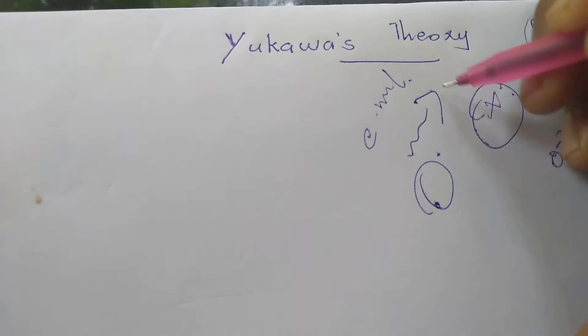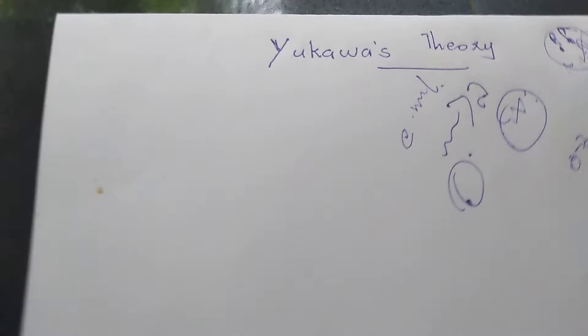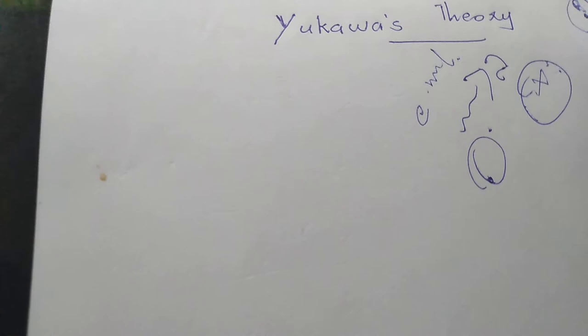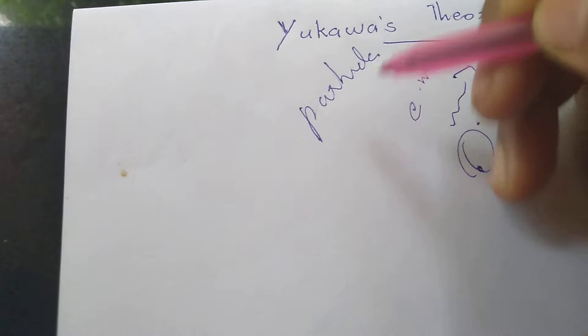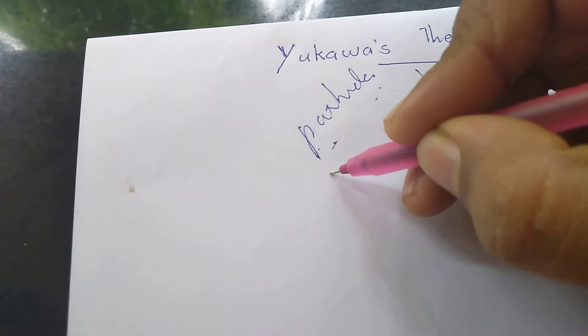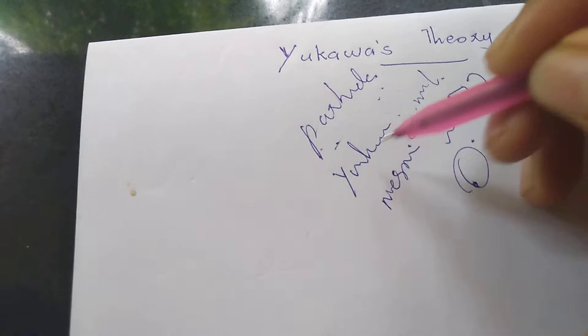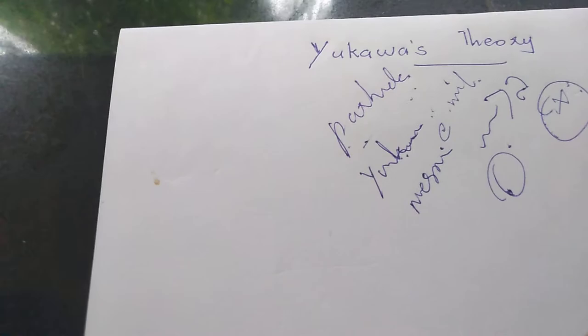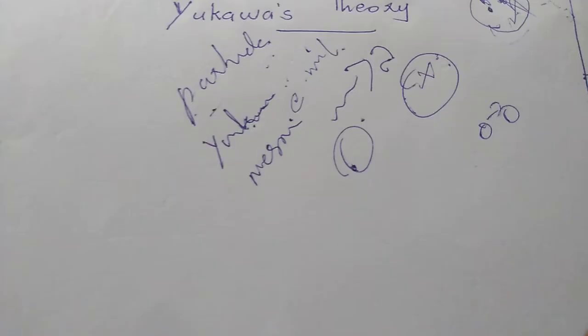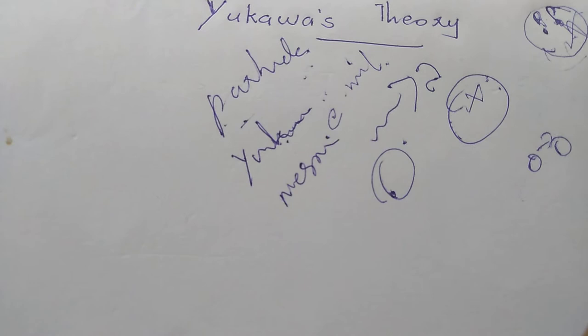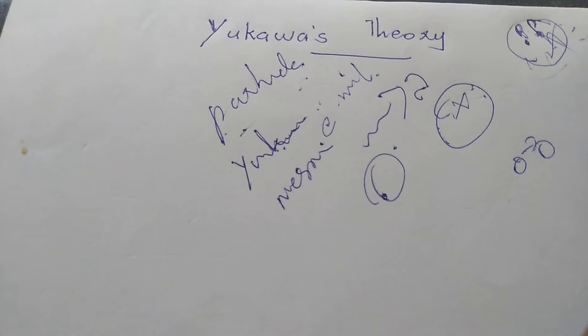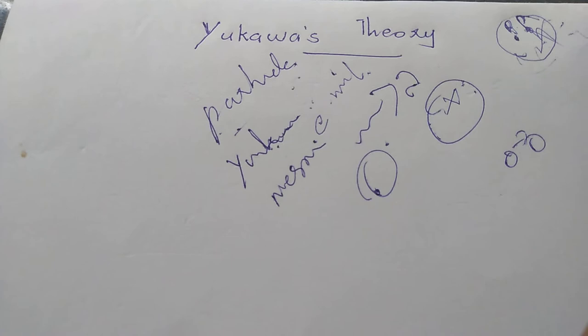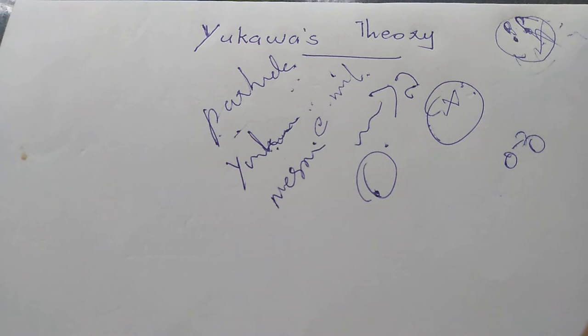This is how we emit and produce photons — this is how we exchange a particle. This is called the Yukawa particle. It is known as Yukawa's particle, predicted by Yukawa. This particle is considered the mediator of the strong nuclear force — this is the exchange particle.